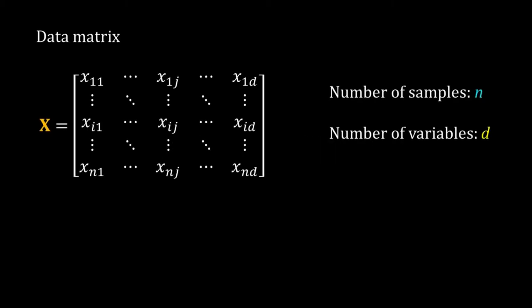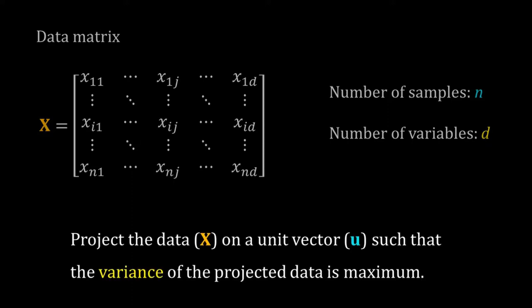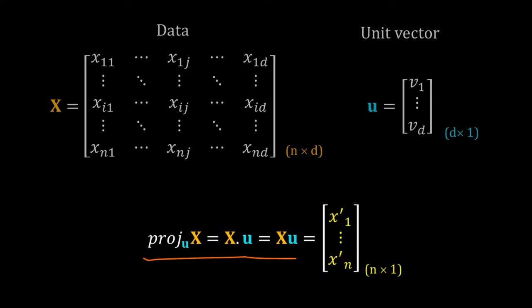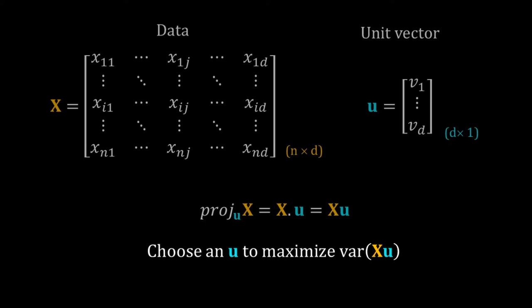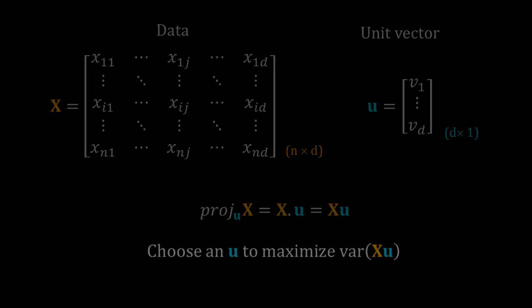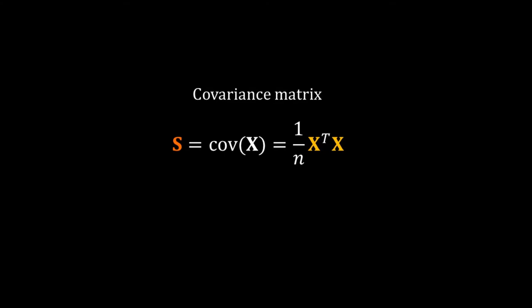Welcome back. This is the second video on the mathematics behind principal component analysis. In PCA, we are projecting our data on a unit vector. X is our data matrix with d variables and n samples. We want to project X on a unit vector u such that the variance of the projected data is maximum. The projection is equal to X times u, and the projected data is an n by 1 vector. The covariance matrix of X is S equal to 1/n times X transpose X, where n is the number of samples.